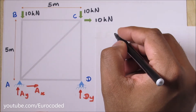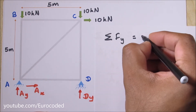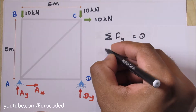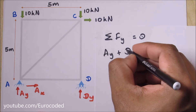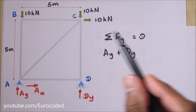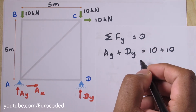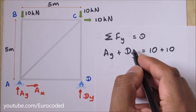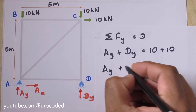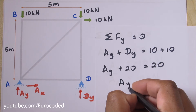Then we can look at vertical equilibrium: ΣFy should be equal to zero. We have two vertical reactions AY and DY, and two vertical forces acting downwards. So AY plus DY equals 10 plus 10. From the moment equilibrium we already know DY is equal to 20 kilo Newton, so AY plus 20 equals 20, making AY equal to zero.